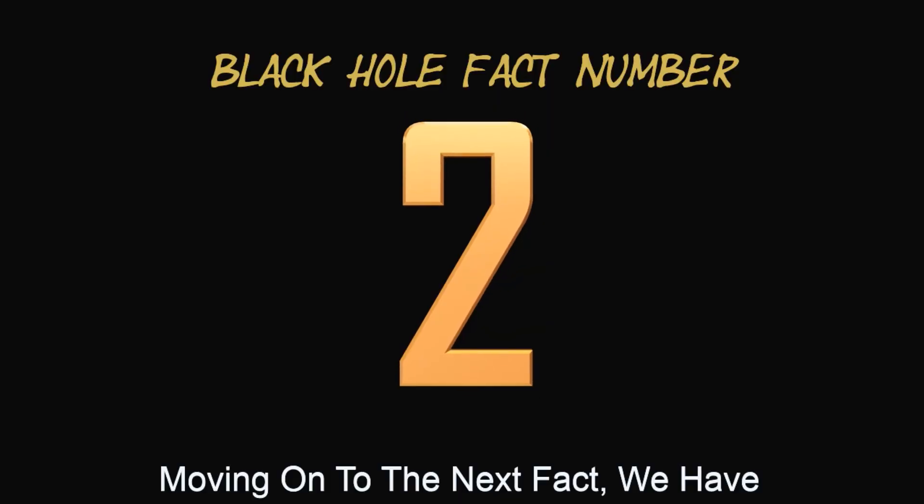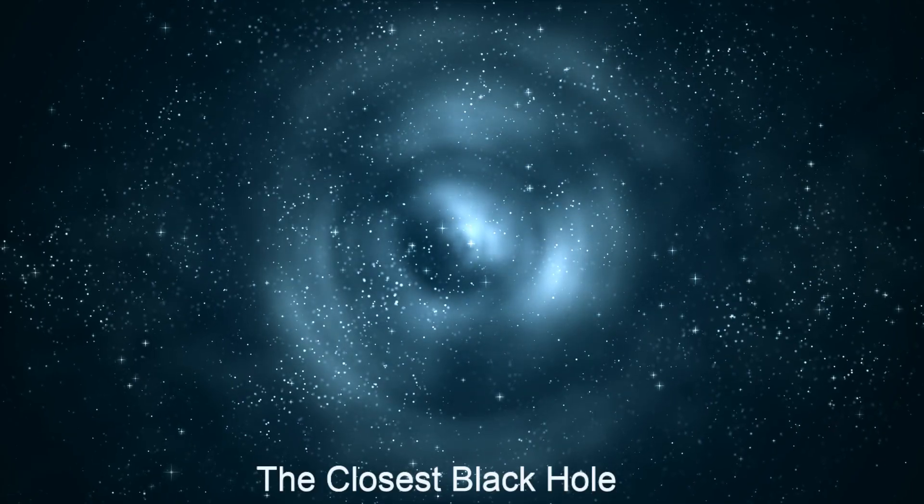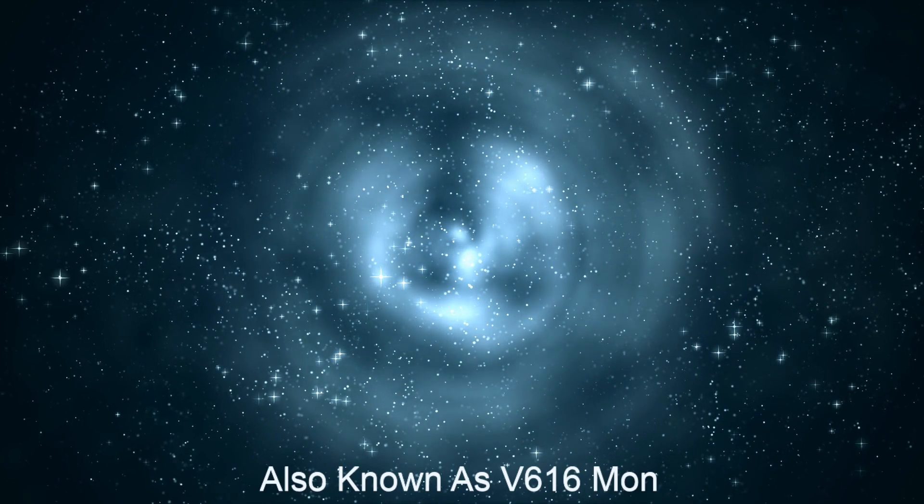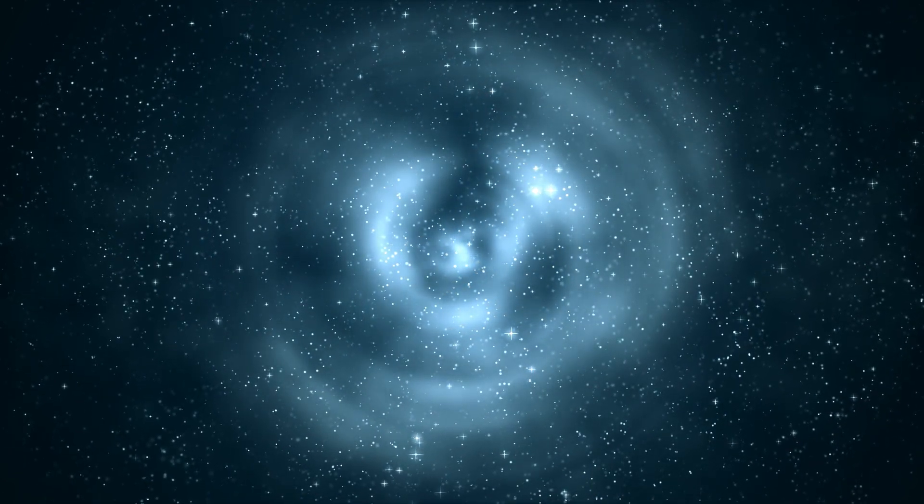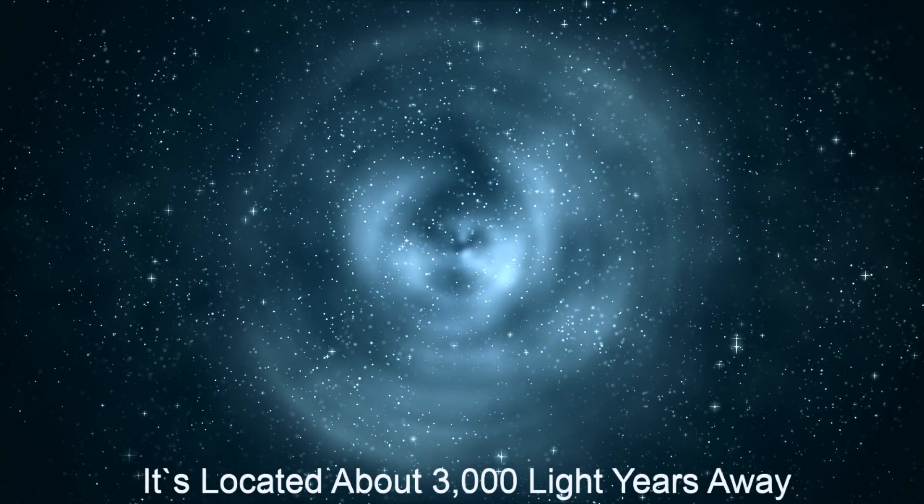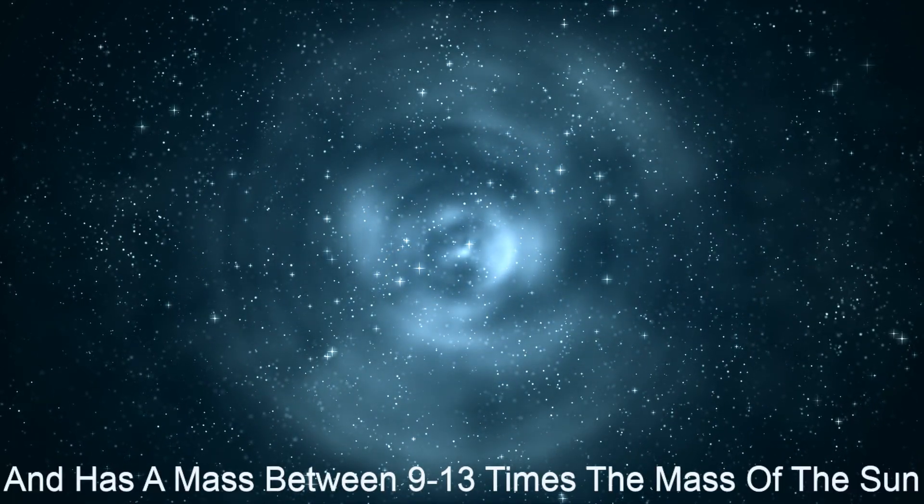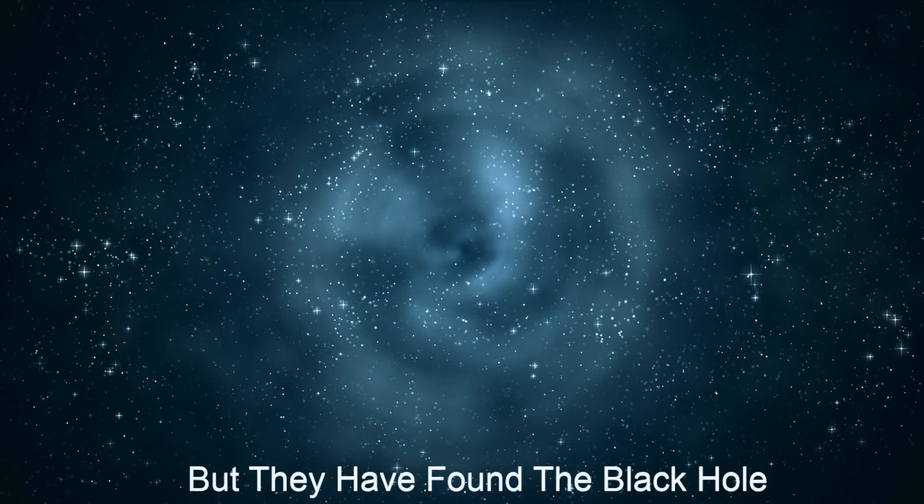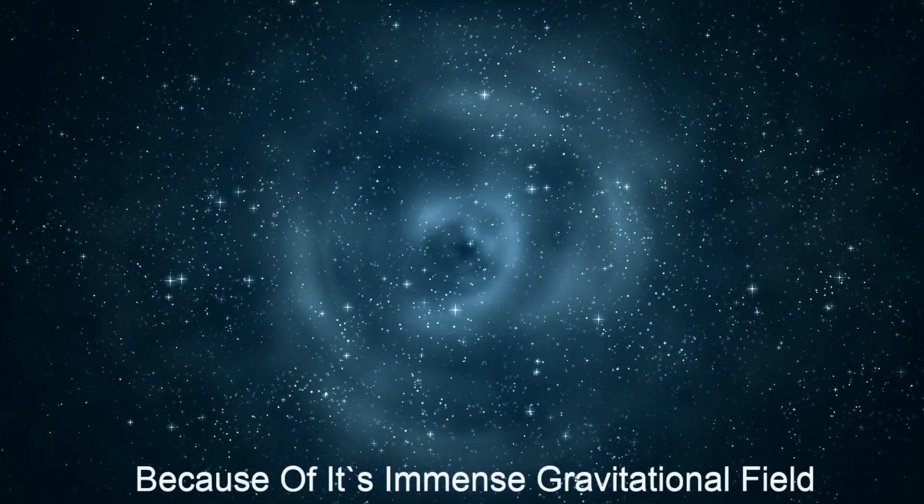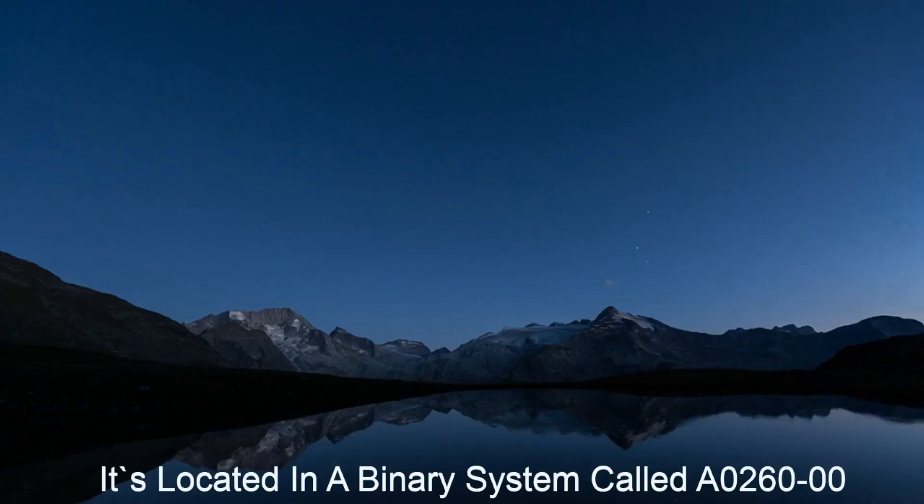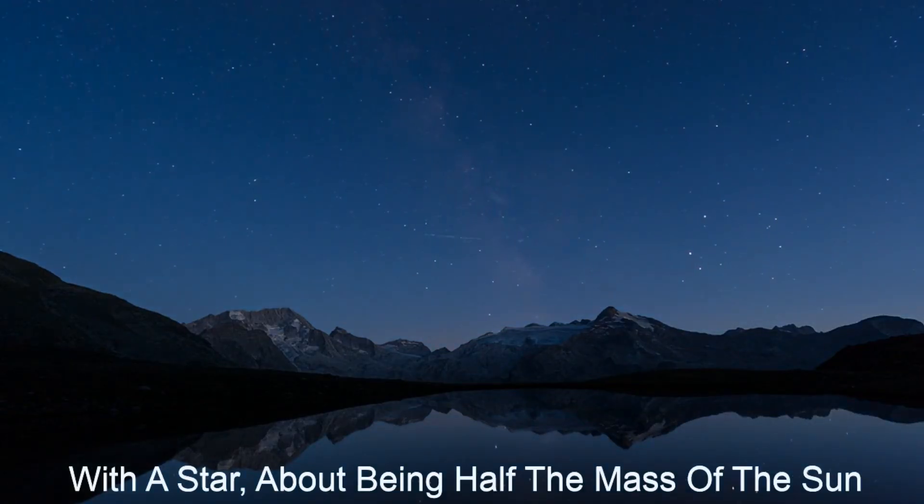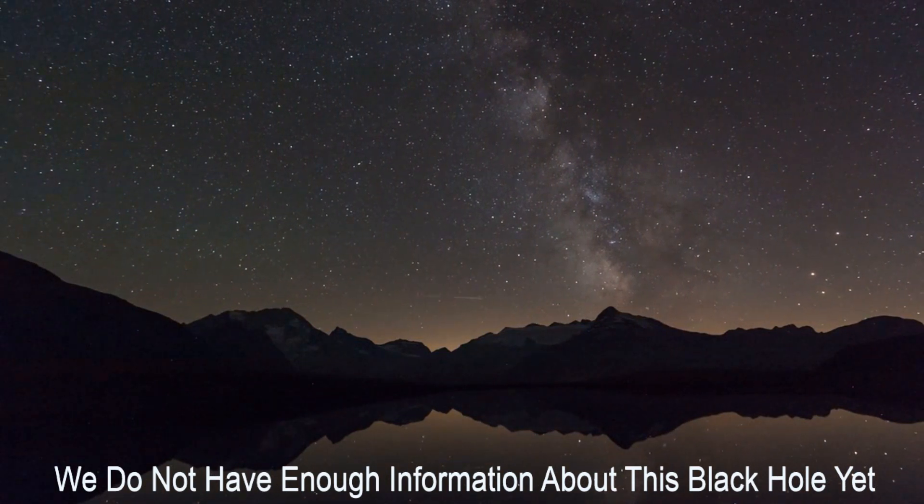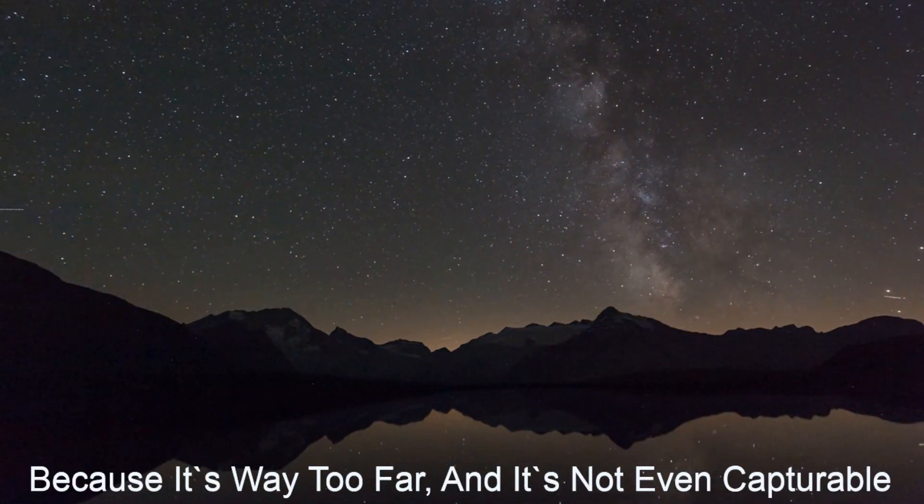Moving on to the next fact: the closest black hole. The closest black hole we know of is the V616 Monocerotis, also known as V616 Mon. It's located about 3000 light years away and has mass between 9 to 13 times the mass of the sun. It cannot be seen by scientists but they have found the black hole because of its immense gravitational field. It's located in a binary system called A0620-00 with a star being about half the mass of the sun. We do not have enough information about this black hole yet because it's way too far and it's not even capturable.